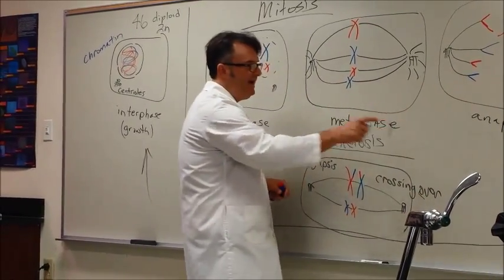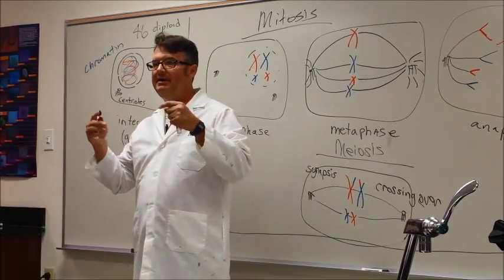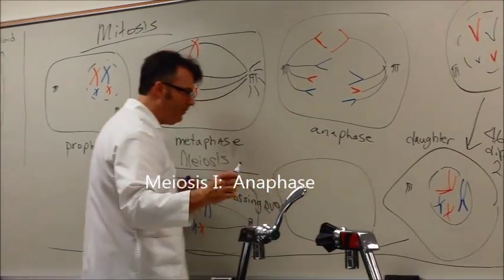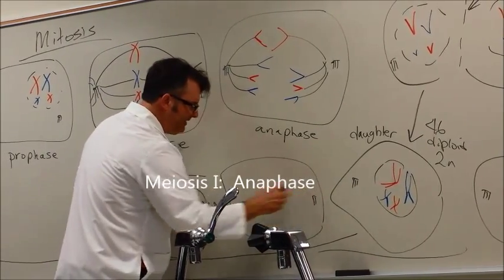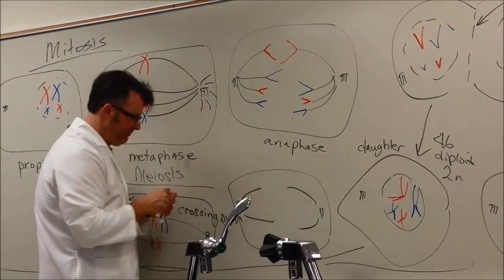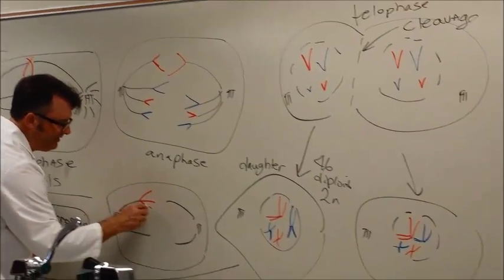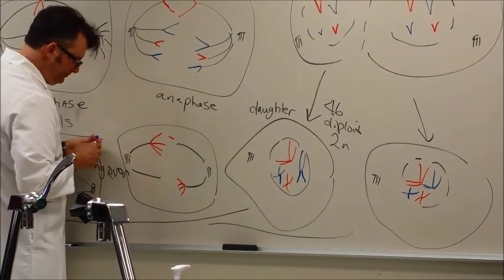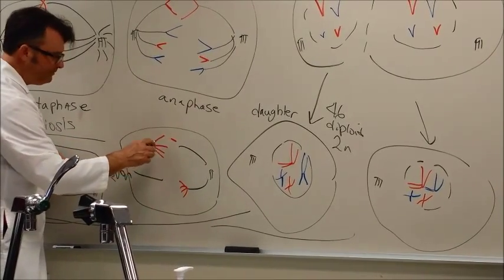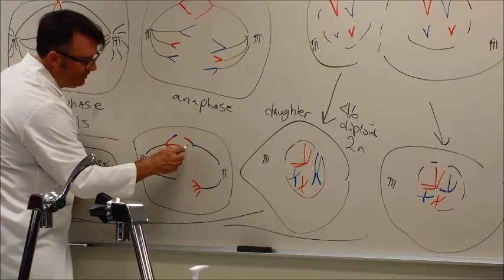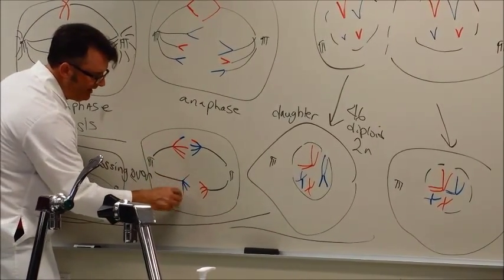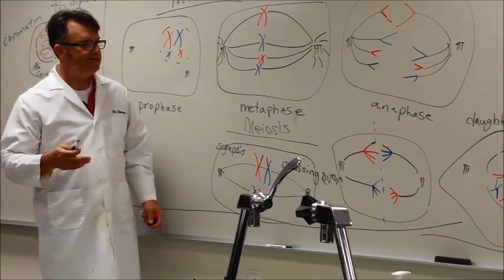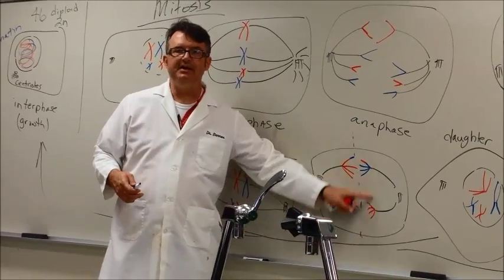Now watch what happens in anaphase, because this is what tells the story of us going from diploid to haploid. In meiosis anaphase, this is meiosis I, what happens is we have entire chromosomes being pulled one way and the other way. So we have big red with its blue tip going one way, and we have big blue with its red tip going the other way. And we got baby blue and baby red getting pulled.